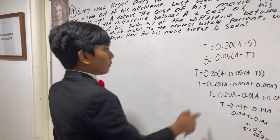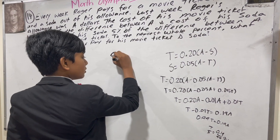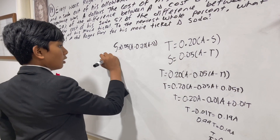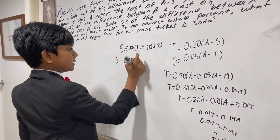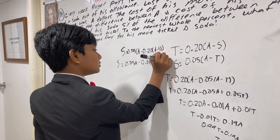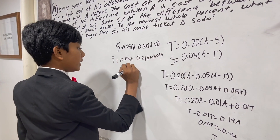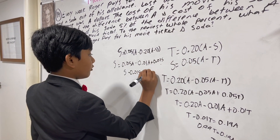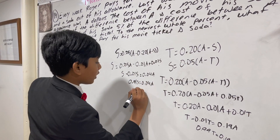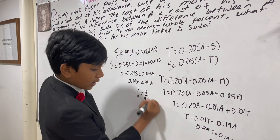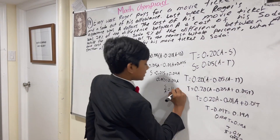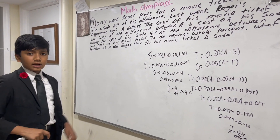Now let's do the same thing but swap. The soda is 0.05 times (the allowance minus the ticket), which gives 0.05A minus 0.01A, and then minus minus becomes plus S. That makes this 0.04, so 0.99S equals 0.04A, or S over A is 4 over 99, which is approximately 4%.